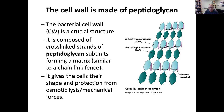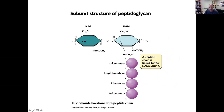What does peptidoglycan look like? This is the basic subunit of peptidoglycan. It has two backbone sugars — its backbone is a disaccharide of N-acetylglucosamine and N-acetylmuramic acid. These are essentially modified glucose molecules that will form into a polysaccharide strand.